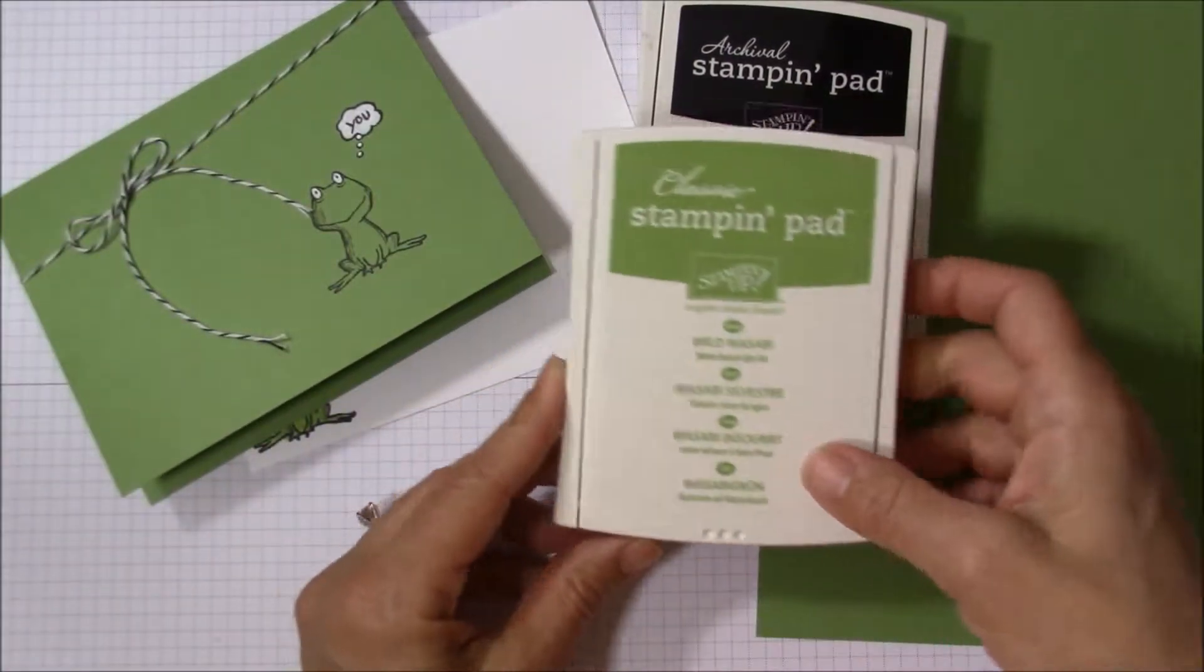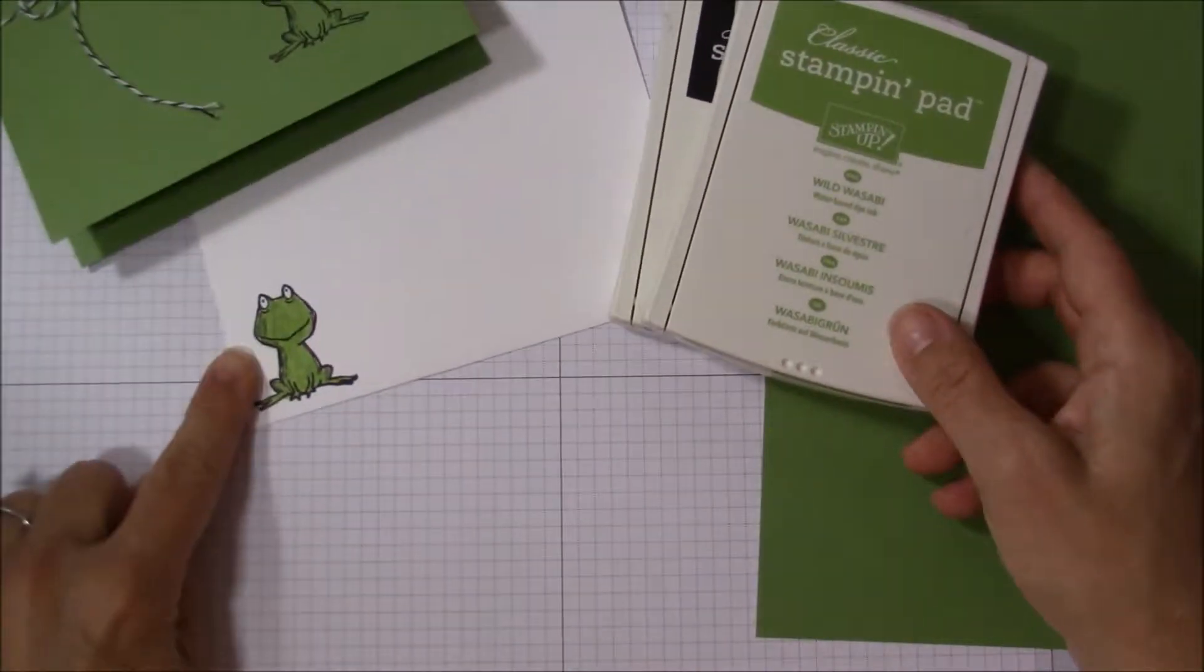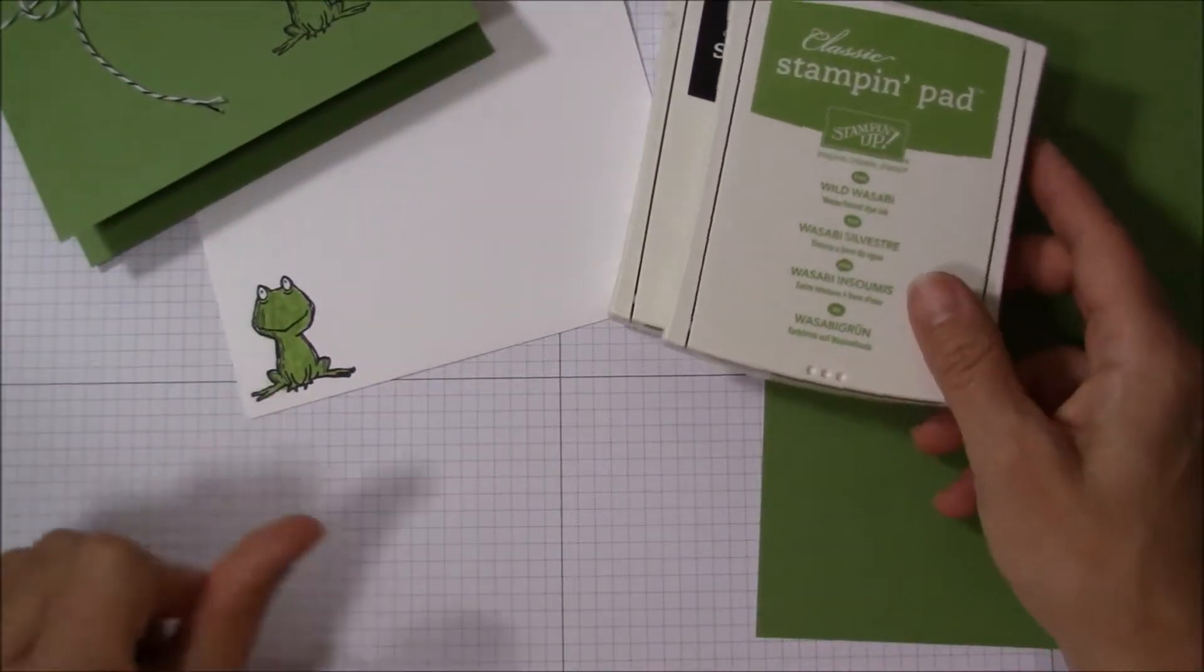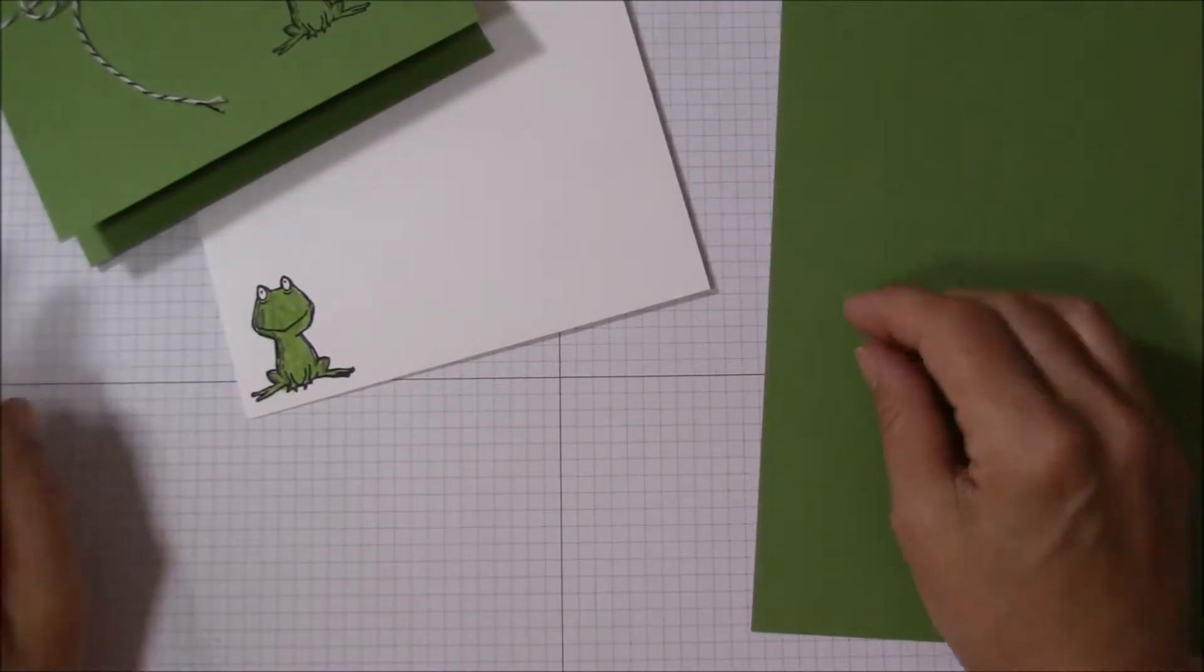I did use the wild wasabi ink to color in the frog on the envelope. Accessory-wise, you will need a piece of black baker's twine—this is 22 inches.